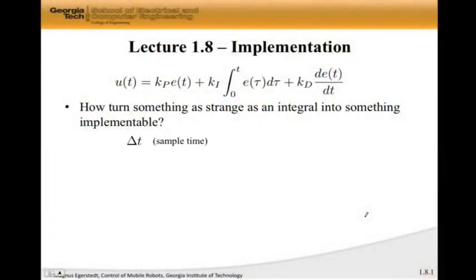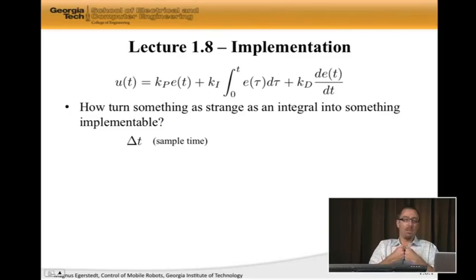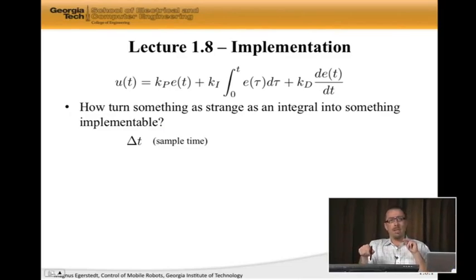The first thing to note is that we always have a sample time. We're sampling at a certain rate, there's a certain clock frequency on the computer. What we need to do is we need to take these continuous time objects that we have here in the PID regulator, and have them be defined in this discrete time.